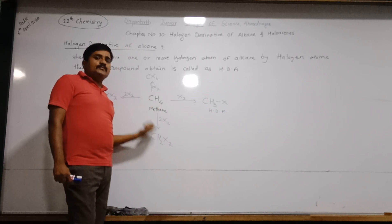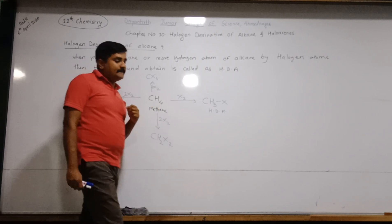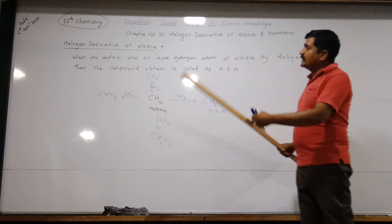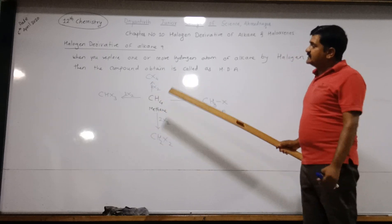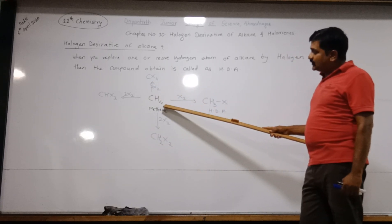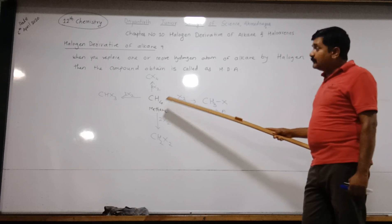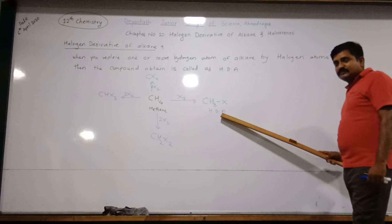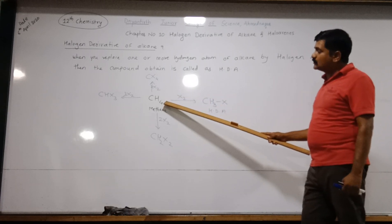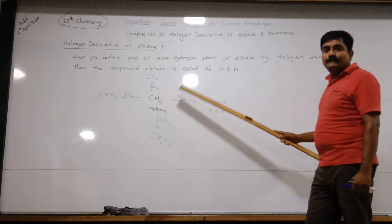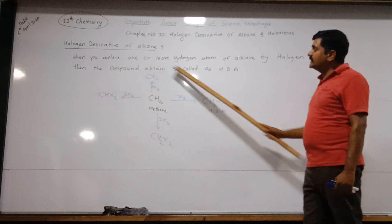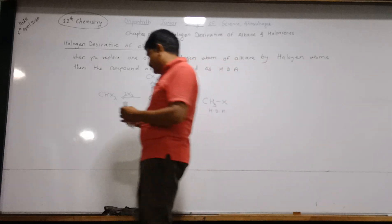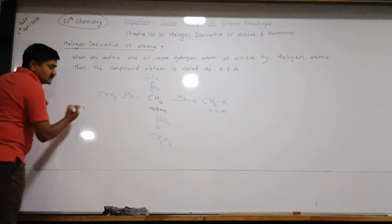So all these four compounds — replacing one, two, three, or four hydrogen atoms — are all called halogen derivatives of alkane. According to our definition, you are replacing hydrogen atoms of alkane by halogen atoms. The compound which is obtained by substitution of one or more hydrogen atoms of alkane by halogen atoms is called a halogen derivative of alkane.